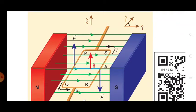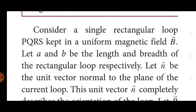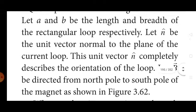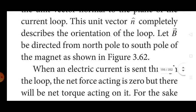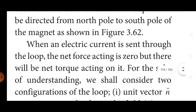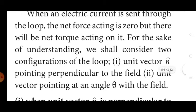See the diagram. Consider a single rectangular loop PQRS kept in a magnetic field B vector. Let A be the length and B be the breadth of the rectangle loop respectively. Let n̂ be the unit vector normal to the plane of the current loop; this unit vector completely describes the orientation of the loop. Let B vector be directed from the north pole to the south pole of the magnet. When electric current is sent through the loop, the net force acting is zero, but there will be net torque acting on it. We shall consider two configurations of the loop.